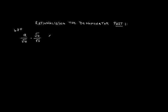To multiply fractions, I do the top with the top and the bottom with the bottom. What I get is a times the square root of b divided by the square root of b times the square root of b, which is the square root of b squared. And this is just a times the square root of b divided by — the square root and the square cancel — so divided by b.